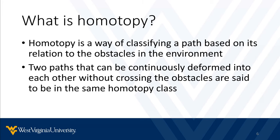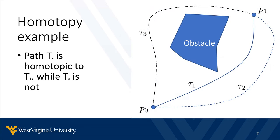Here are a few examples to help visualize it. This is an example of how homotopy classes work. As you can see, path tau2 can be continuously deformed into path tau1 without crossing the obstacle, and is therefore in the same homotopy class. On the other hand, path tau3 cannot be deformed into tau1 without crossing the obstacle, which means it lies in a different homotopy class.